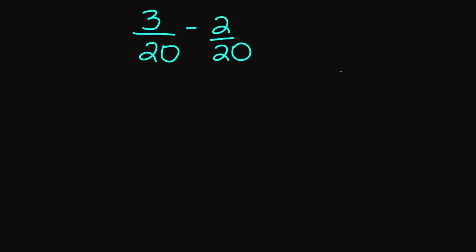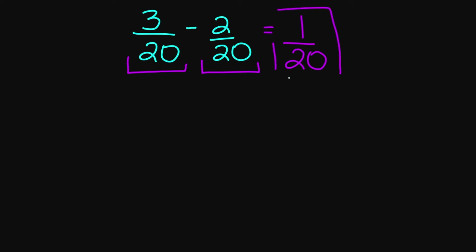Let's look at this example here: 3 over 20 minus 2 over 20. My denominators are the same, so I'm going to subtract my numerators. 3 minus 2 is going to give us 1, over 20. So your final answer is 1 over 20.